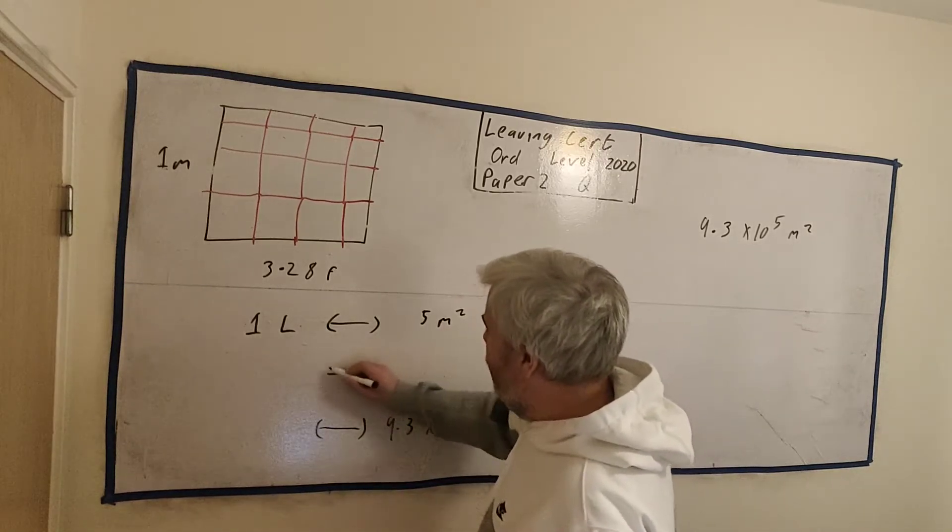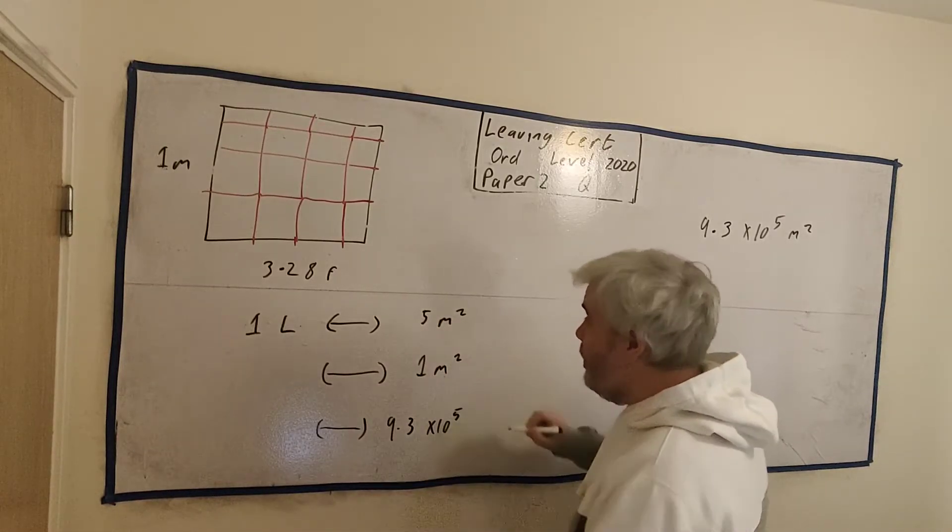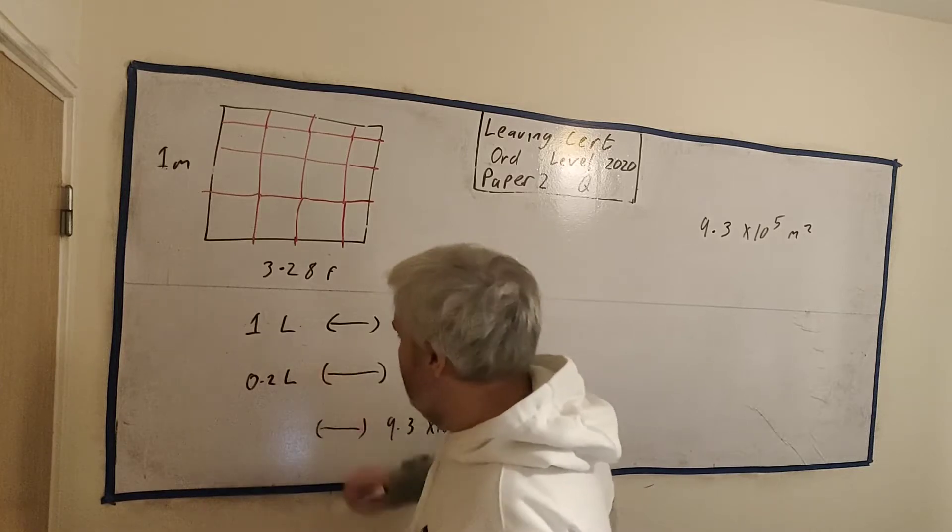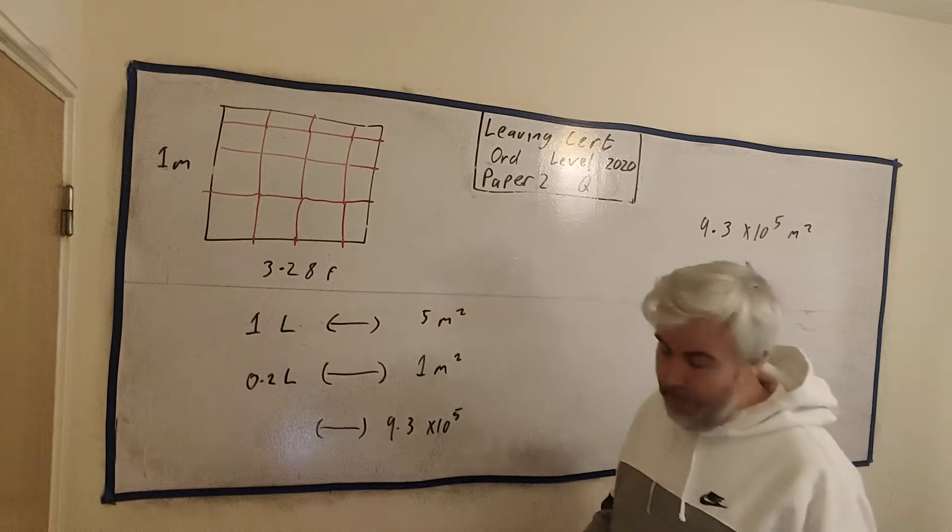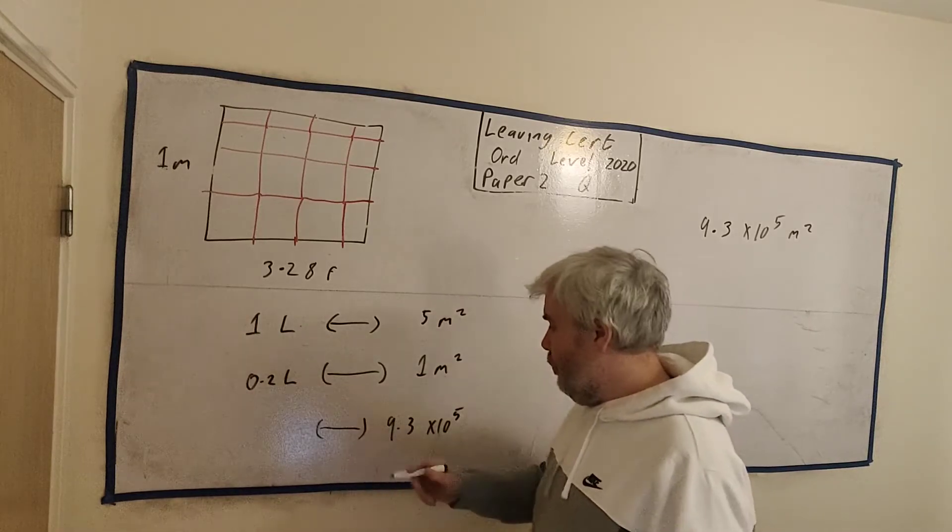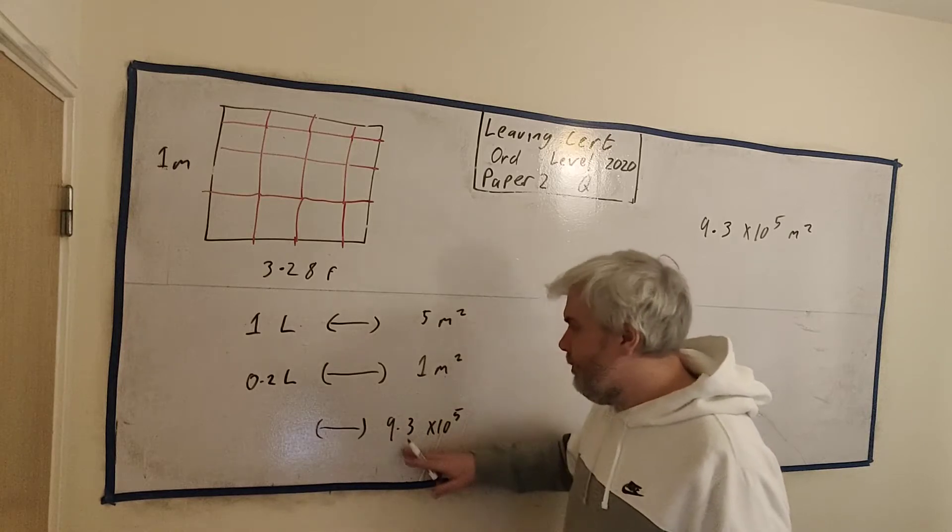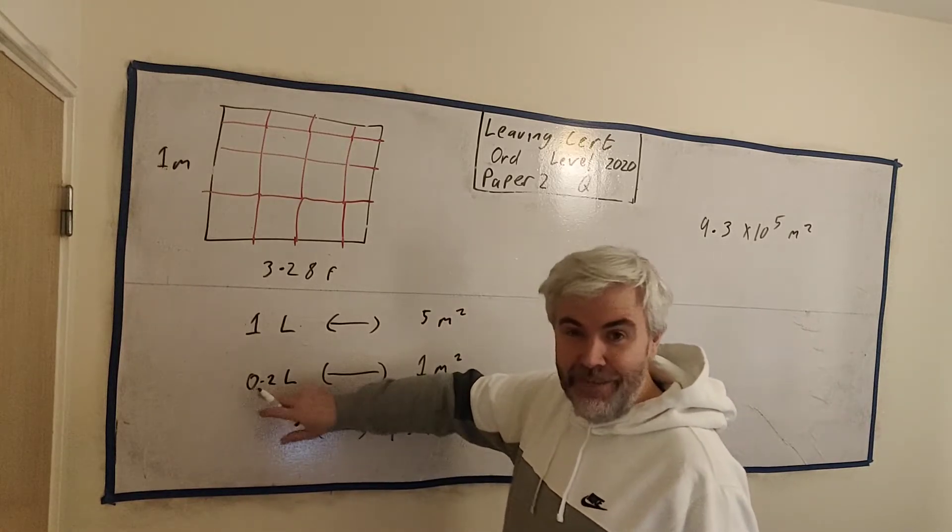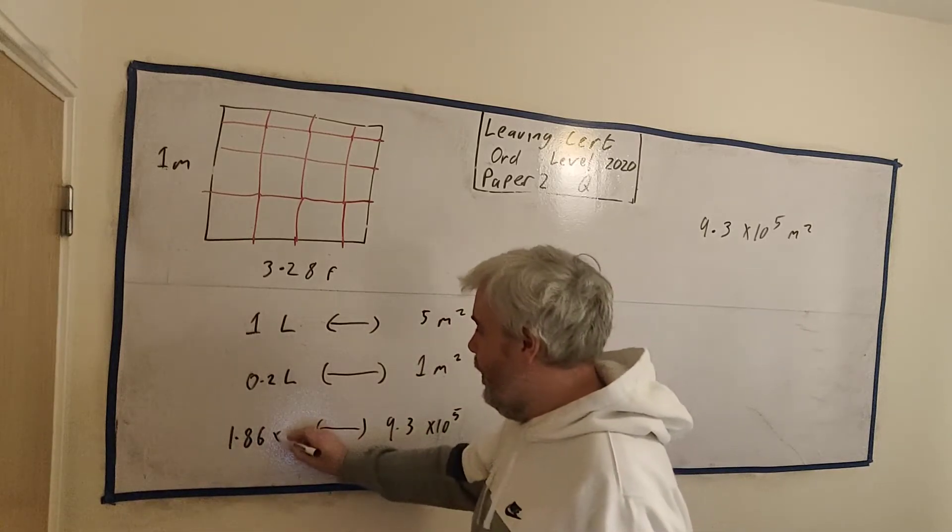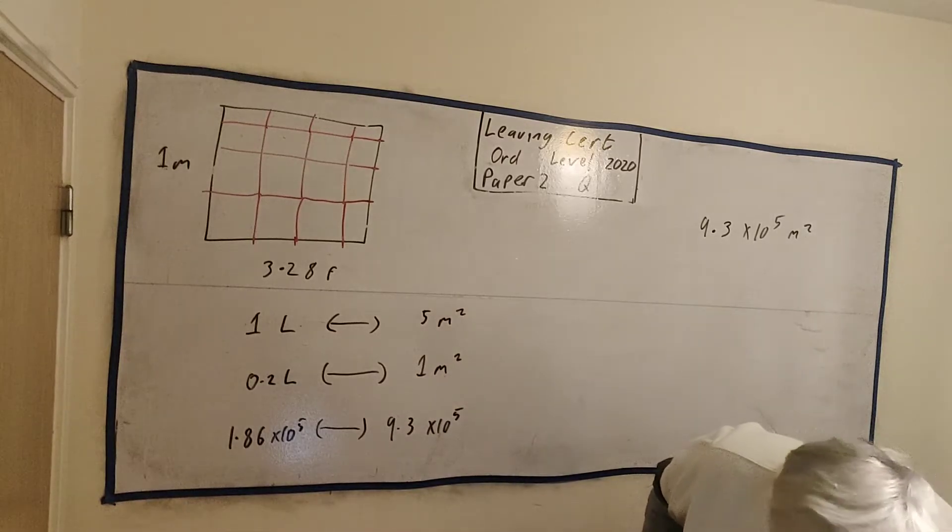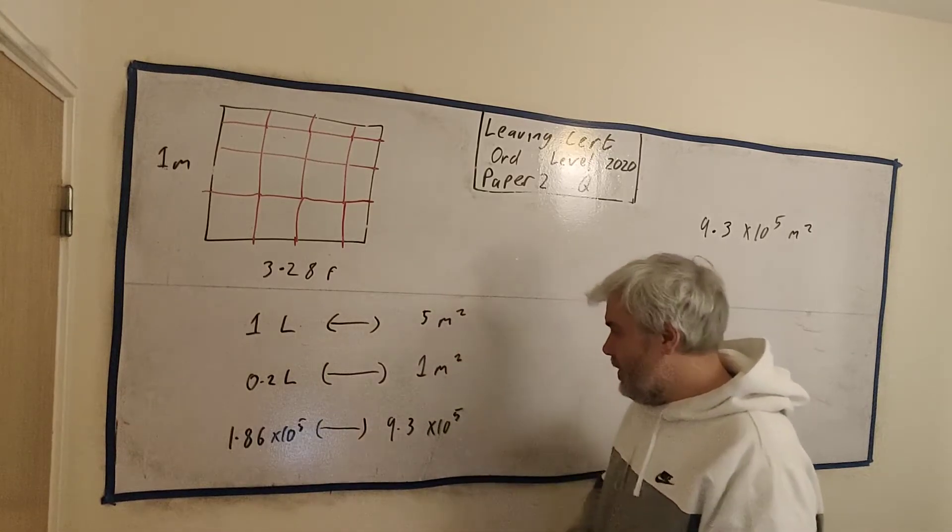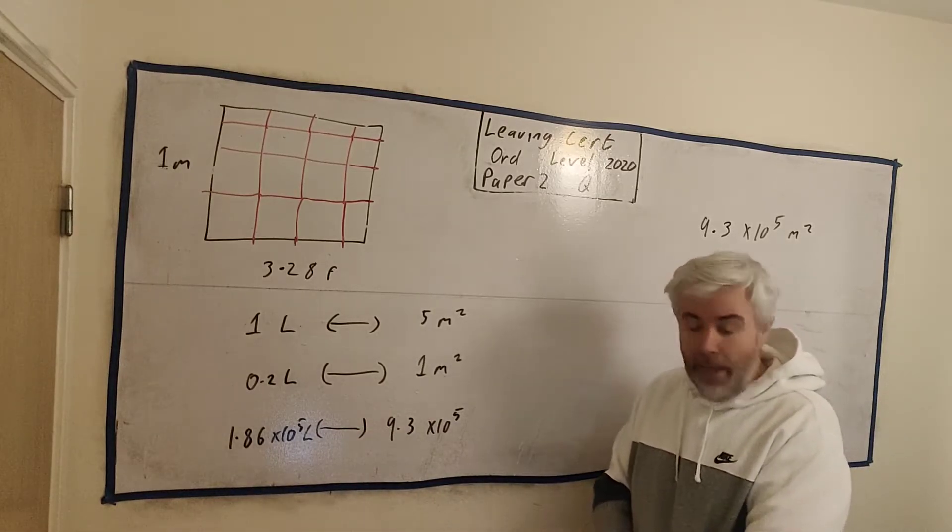1 liter will do 5 meters squared. What I'd like to get to, I'd like to get to this number, 9.3 times 10 to the 5. How do I get 5 to this? I always like to use 1. How do I turn this into 1 square meter? It's quite easy. Divide by 5. 1 by 5 is 0.2. Multiplying 9.3 times 0.2, multiply it by 2, I get 18.6. Divided by 10, we'd get 1.86. And then multiply it by another 10 to the power of 5. That's probably needlessly complicated, because we all have calculators. That's how many litres it would take to paint this bridge.